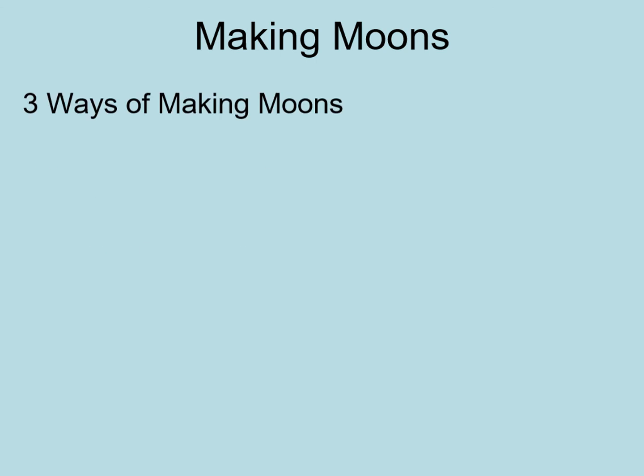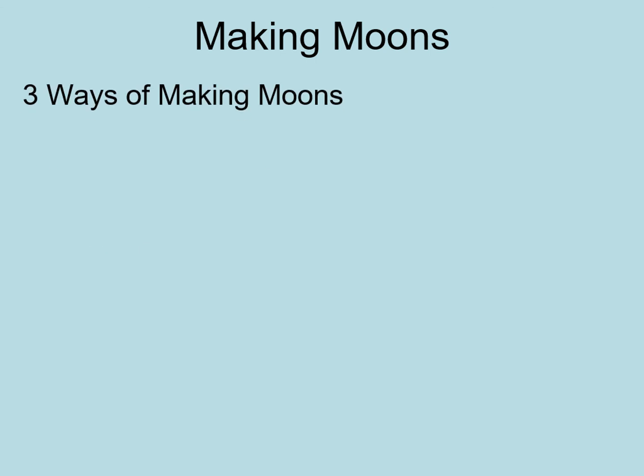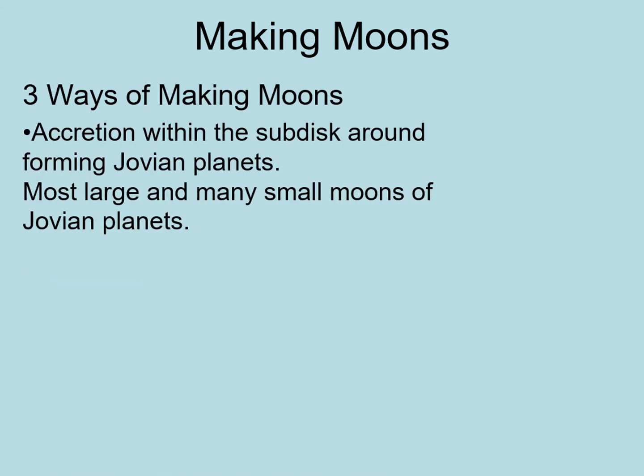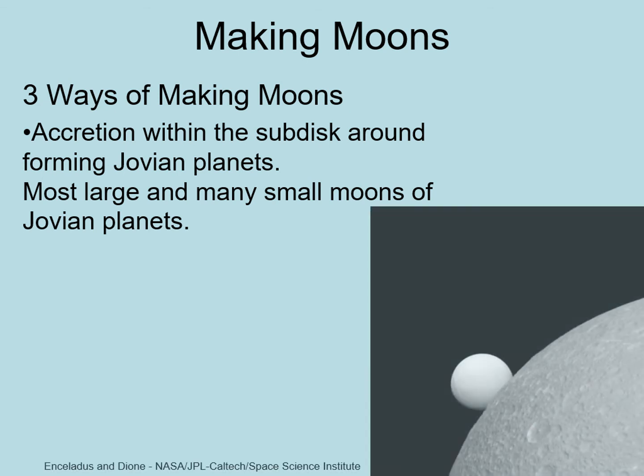Let's look at the different ways we know of making moons around planets and other bodies. We've now seen two of them, but we'll add a third one to the list. The first way was part of the formation of giant planets. During gas accretion, a sub-disk forms around the growing Jovian world. Within this disk, solids condense and solid body accretion happens, building up many of the moons around the Jovian planets, including almost all of the large moons and many of the smaller ones.